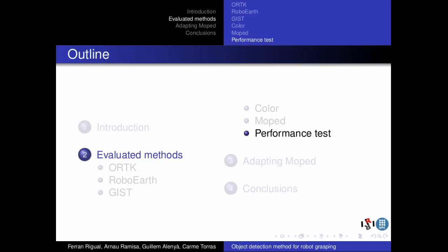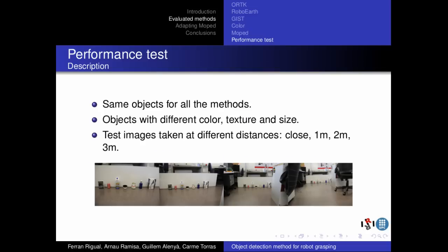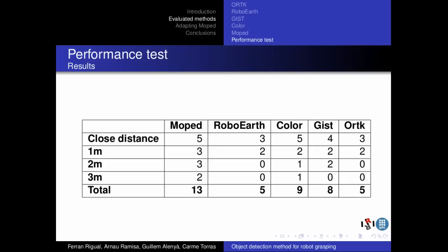After reviewing the methods, a performance test is designed and executed. For the performance test, we use the same objects for all the methods. The objects have different color, texture and size. There are 4 test images: one taken from close distance and the rest taken from 1, 2 and 3 meters respectively. The results of the performance test are reflected in a table, where each cell contains the number of objects detected by the method on the column for the test image on the row. MOPET is the method obtaining the best results both in close and far distance.